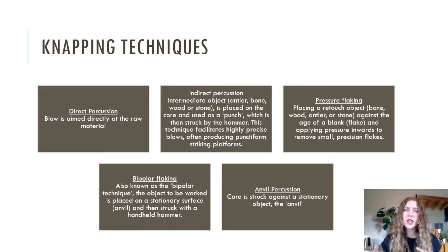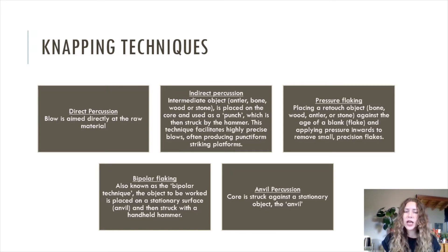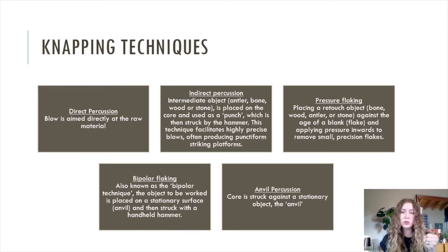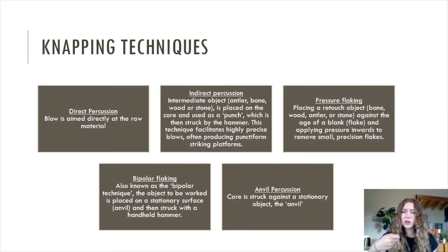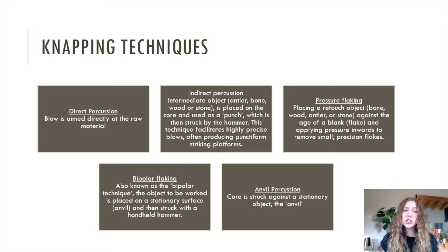Within the napping process, there are different techniques that can be utilized within direct or indirect percussion methods. Direct percussion is when the blow is aimed directly at the raw material — the best example being handheld percussion, where you're holding the objective piece and the hammerstone and hitting the hammer directly onto the objective piece. Indirect percussion is when you're using an intermediate object such as antler, bone, wood, or stone, placing it onto the core and using it as a sort of punch, which is then struck by the hammer.